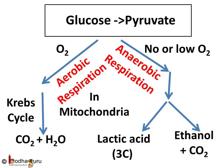Some organisms live in places where oxygen is not present. Some of these primitive organisms have not even evolved enough to have mitochondria. They partially break down the pyruvate to produce energy through the anaerobic respiration process. For example, in yeast, pyruvate is partially broken down into ethanol and carbon dioxide. Some organisms produce lactic acid from pyruvate, similar to what happens in our muscles in times of oxygen deficiency. That was all about cellular respiration. Bye-bye.